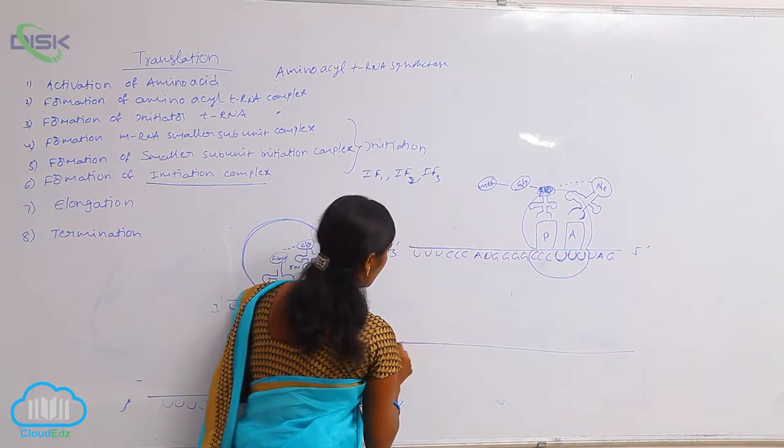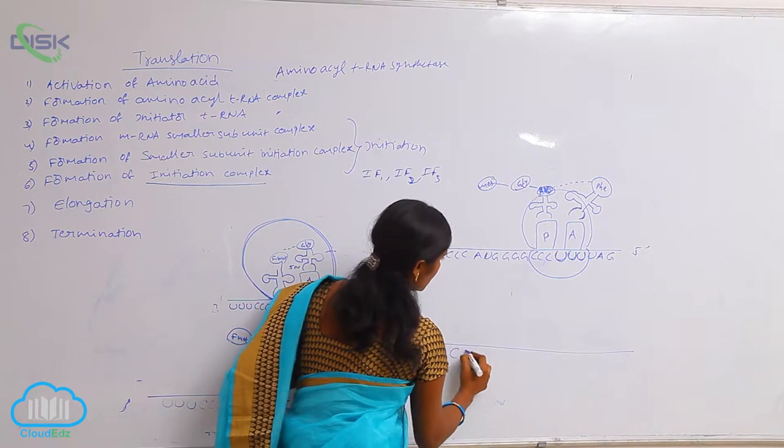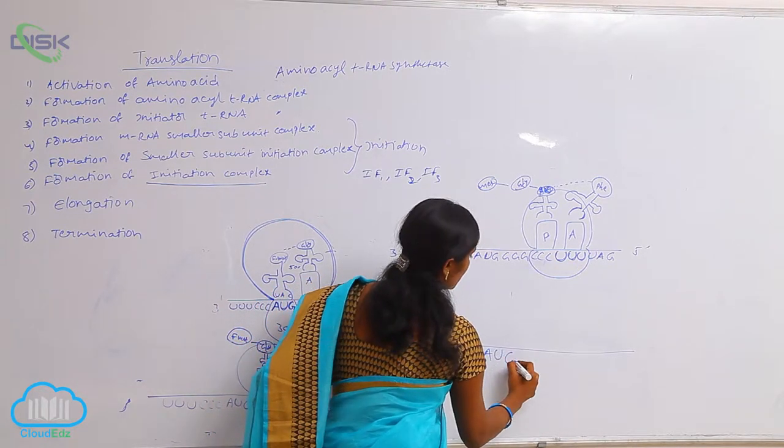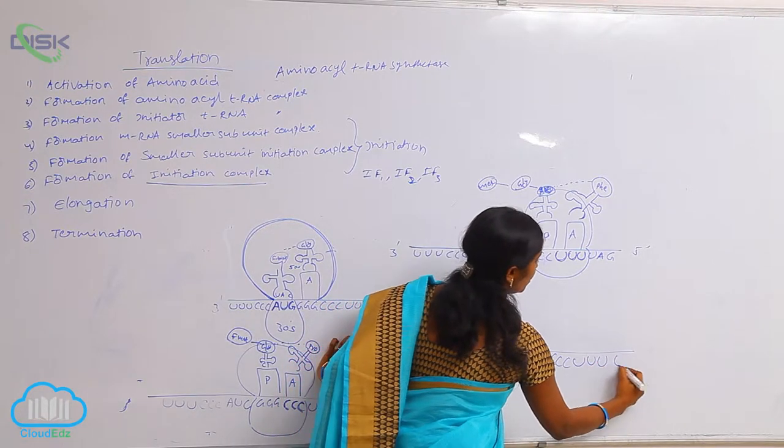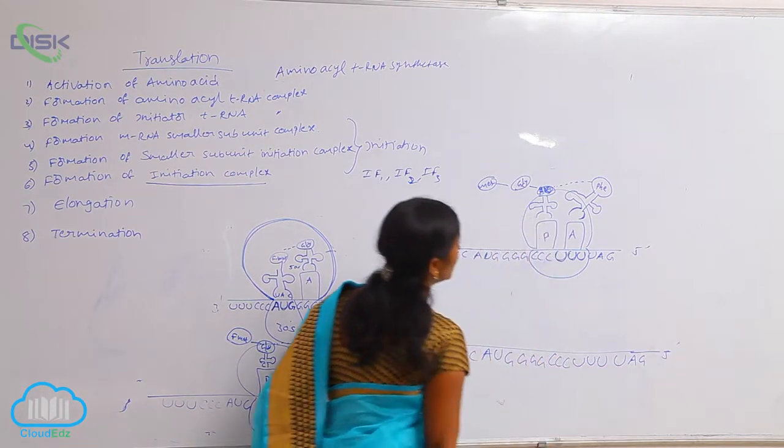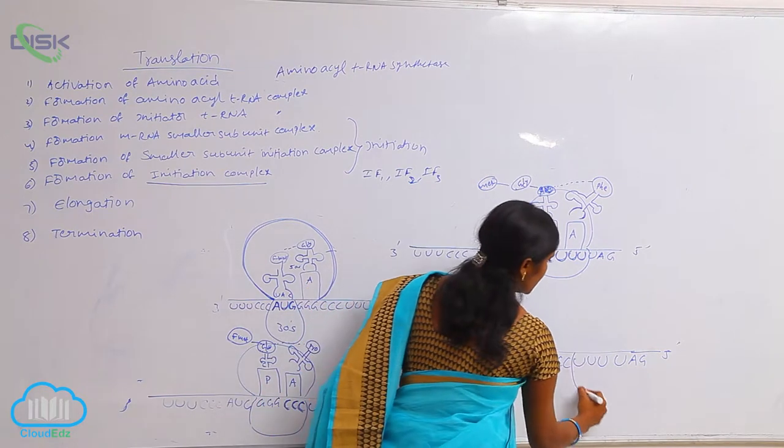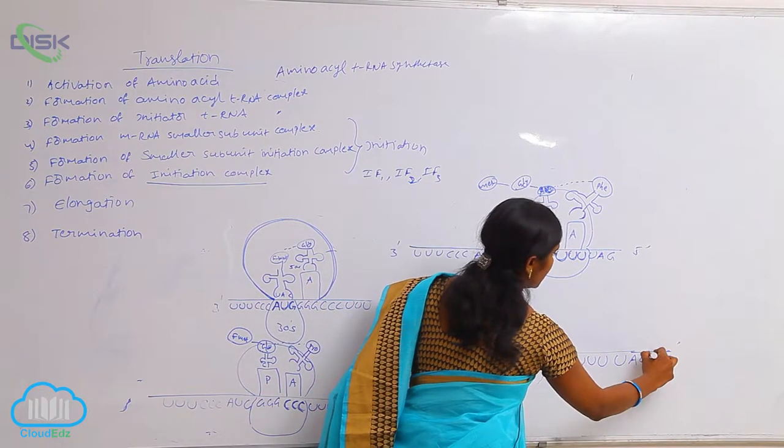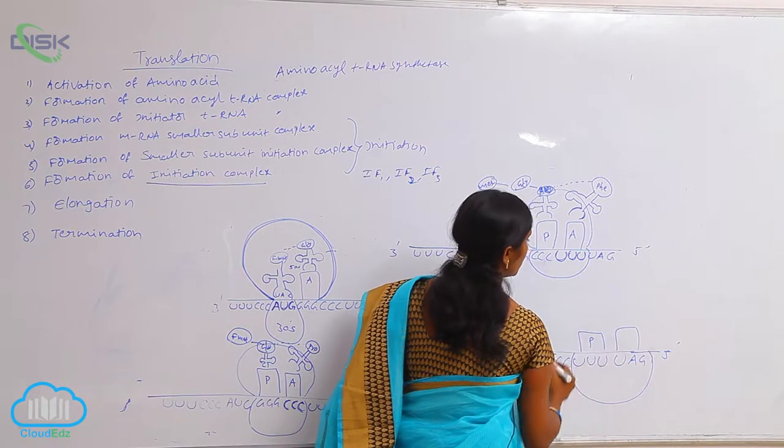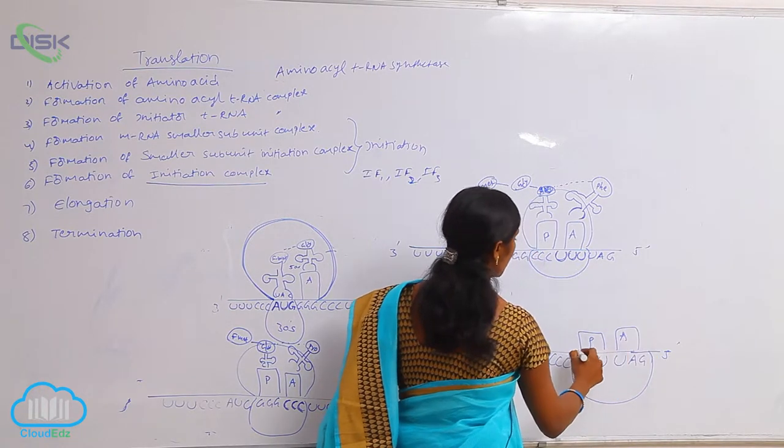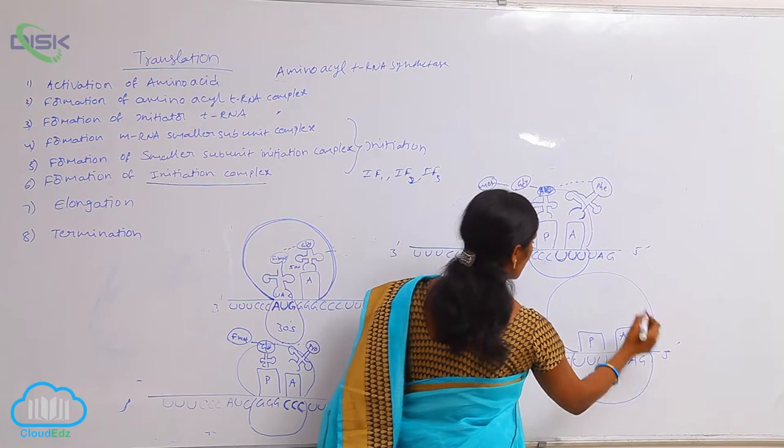So, 3 dash UUU CCC AUGGGG CCC UUU UAG. While it is reached to here, here the termination codon is present. So, this is become polypeptide site and this is become amino acid site. This is the larger subunit.